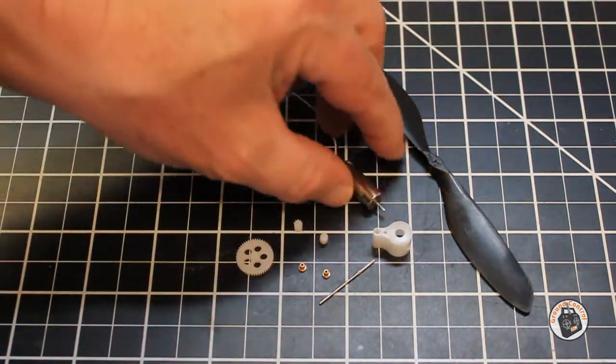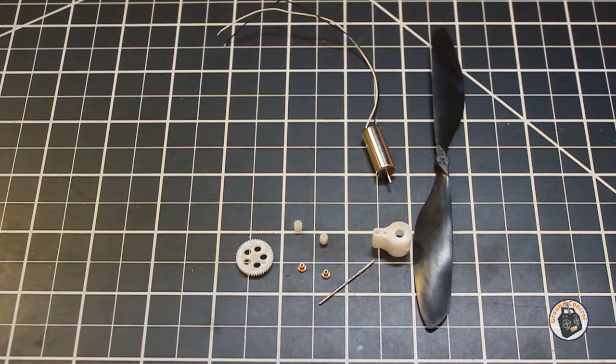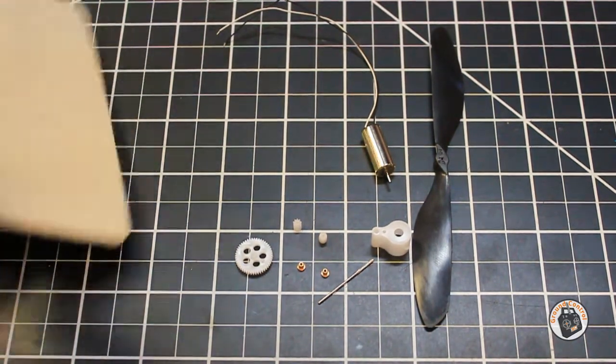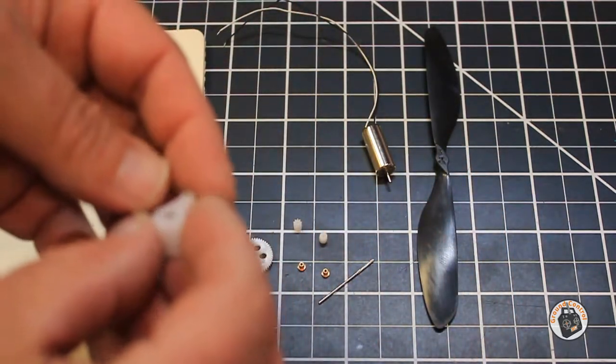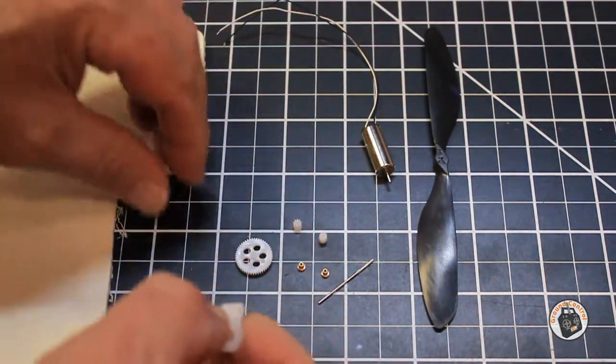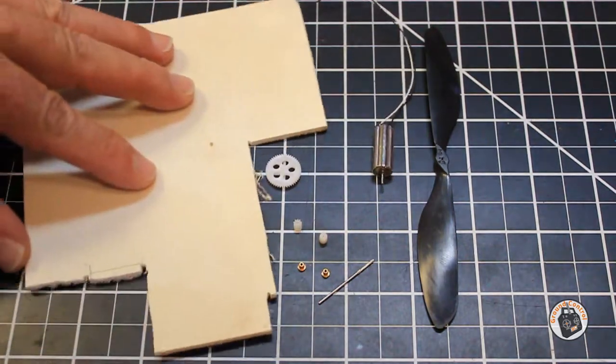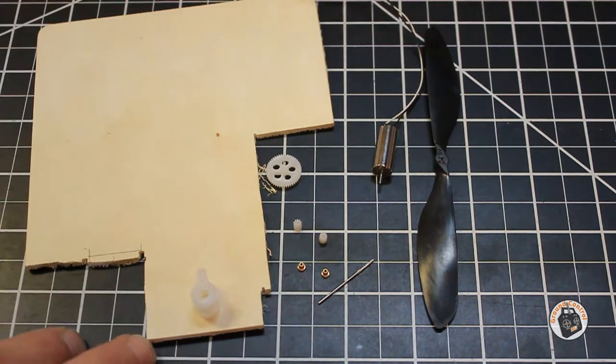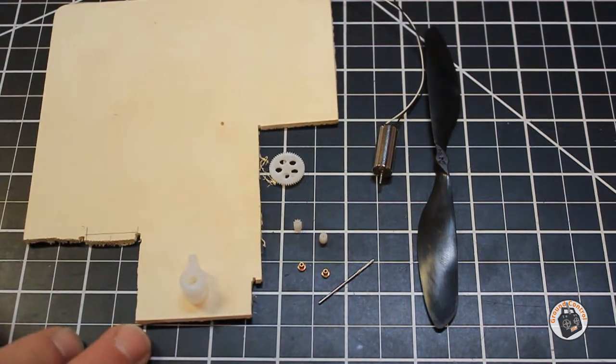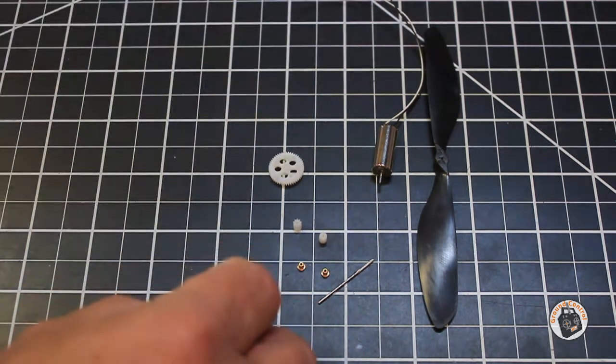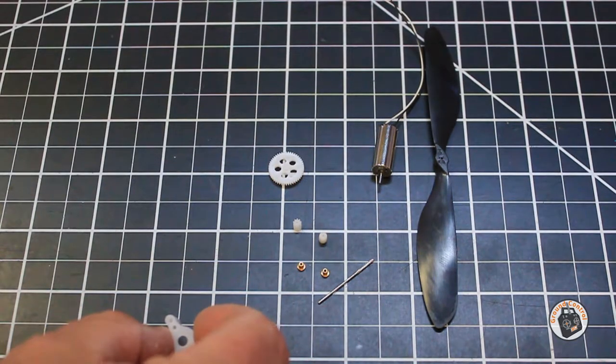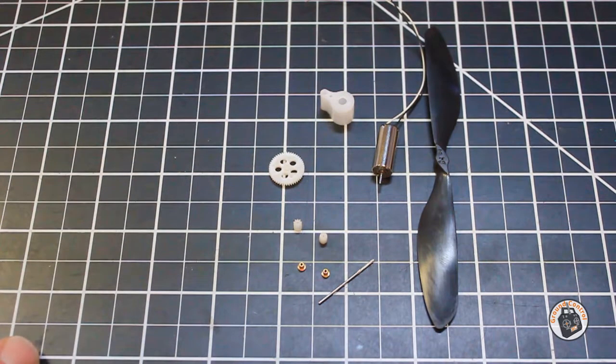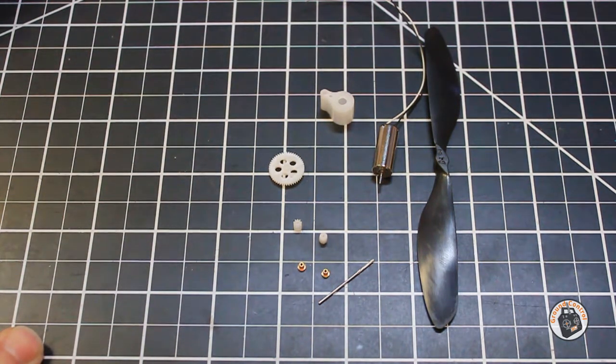The first thing I would suggest you do before you put this motor together is take this little housing—there's no easy way to mount this thing in a plane—take a piece of plywood, take your plastic housing, and trace that out ahead of time before you assemble it. The reason I say that is because you're going to have to mount this prop, motor, and gearbox in some type of airplane.